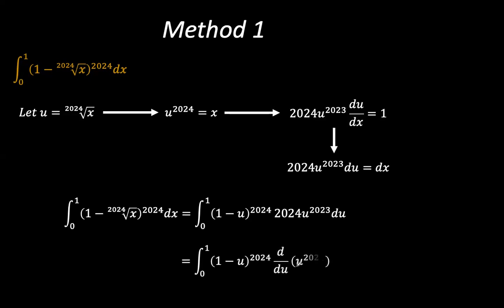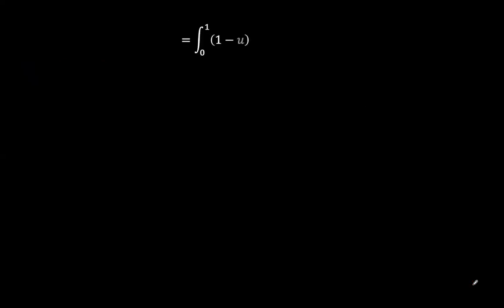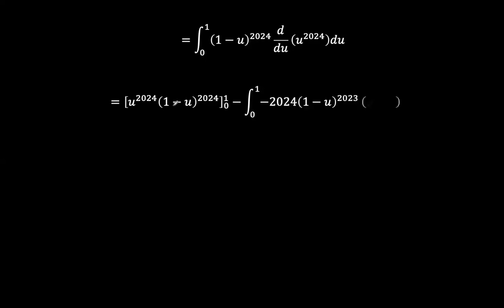That's interesting because another way to include this is: 1 minus u to the power of 2024 times the derivative of u to the power of 2024. This can be expressed using integration by parts, where u is equated to 1 minus u to the power of 2024, and v is u to the power of 2024. Integration by parts gives uv minus the integral of v du.